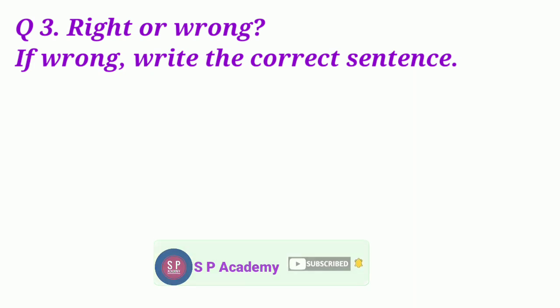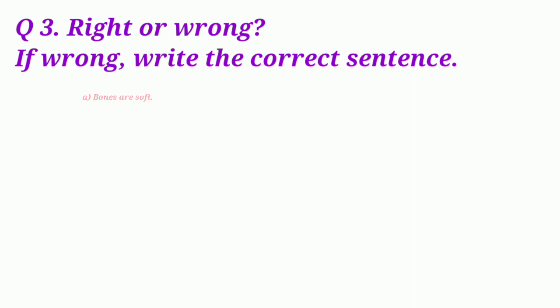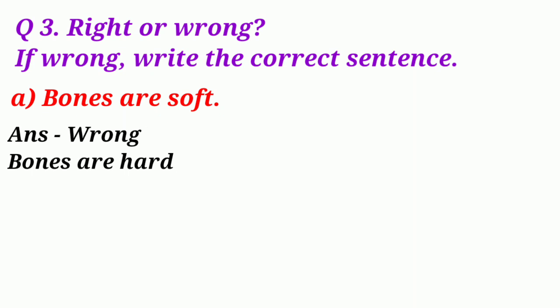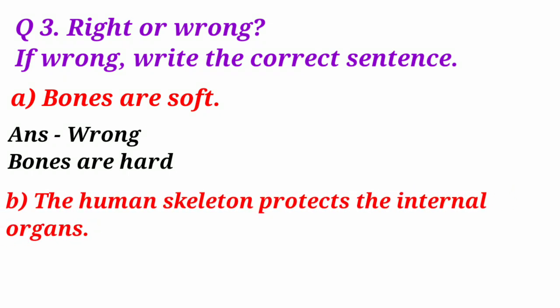Question 3: Write correct or wrong for the following sentences. a. Bones are soft — Wrong. b. The human skeleton protects the internal organs — Right.